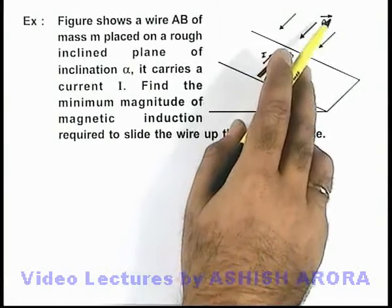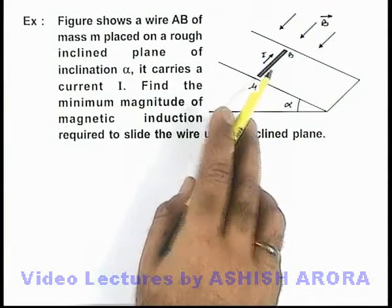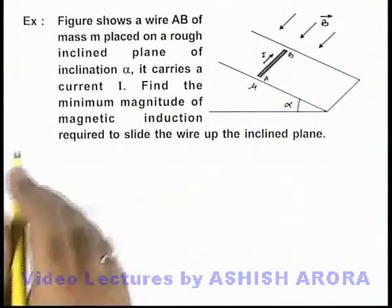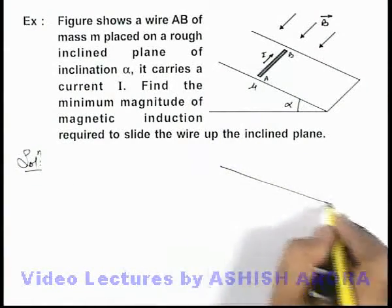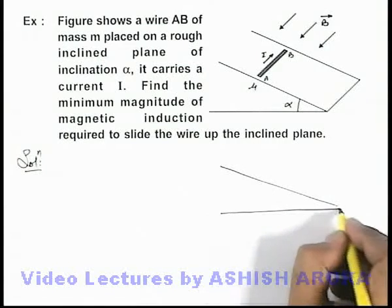Here we can see the magnetic induction is applied in the direction normal to the plane of this incline. Now in this situation, if we draw the free body diagram of the wire by looking at its cross section,